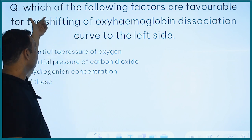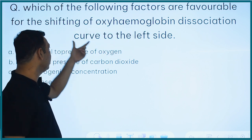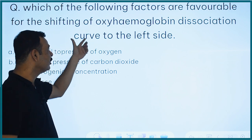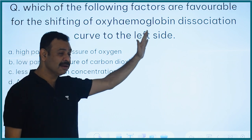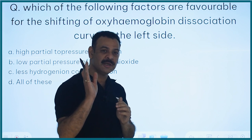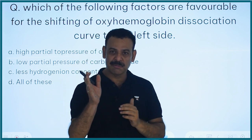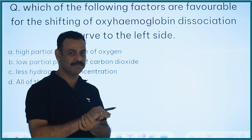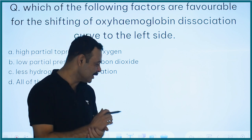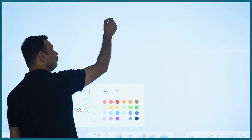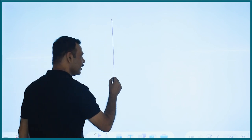Which of the following factors are favorable for the shifting of the oxyhemoglobin dissociation curve to the left side? You have studied the dissociation curve. When does left-side shifting occur in the dissociation curve? First of all, you need to know this. Let's go — here we will see, in case you have forgotten.